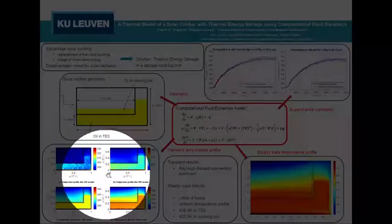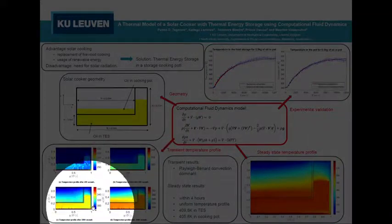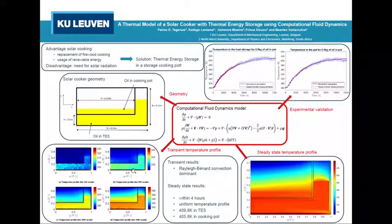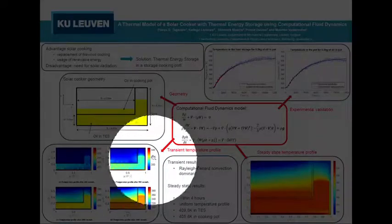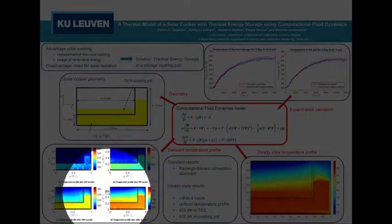You can see that the temperature profile in the thermal energy storage system is quite uniform within time. So this is due to the natural convection, which creates mixing. And therefore the temperature profile becomes quite uniform.